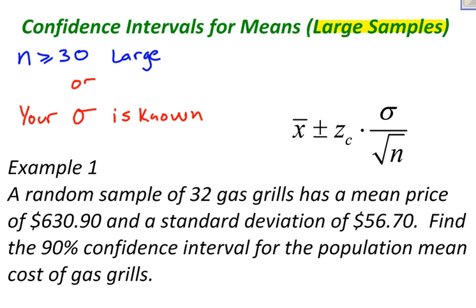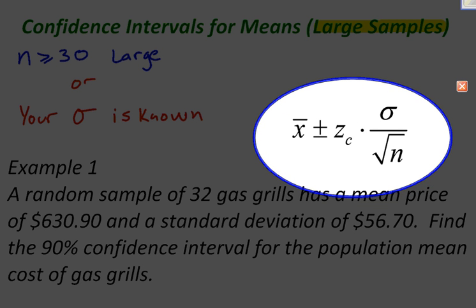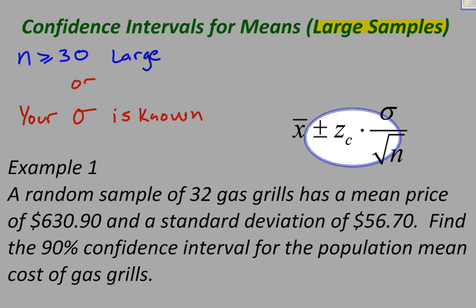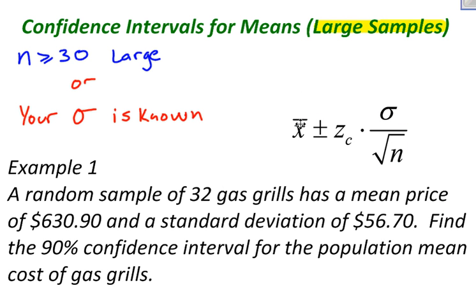So let's jump into what a confidence interval looks like. Down here is the formula for creating a confidence interval for means if we have a large sample. Every confidence interval is made up by some kind of estimate, plus or minus the margin of error.